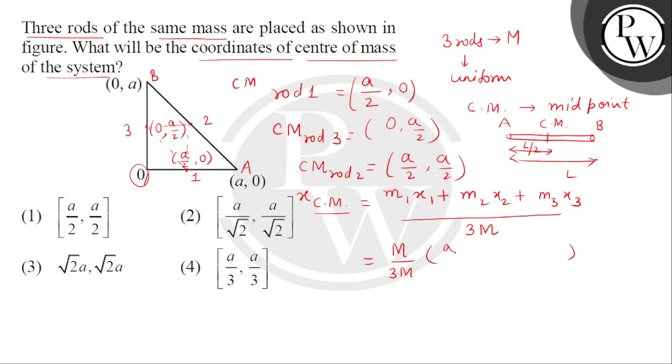So, hume milega A by 2 plus 0 plus A by 2. So, hume isse milega A. So, this will be A by 3. M, M cancel ho gaya. Toh mil gaya A by 3.